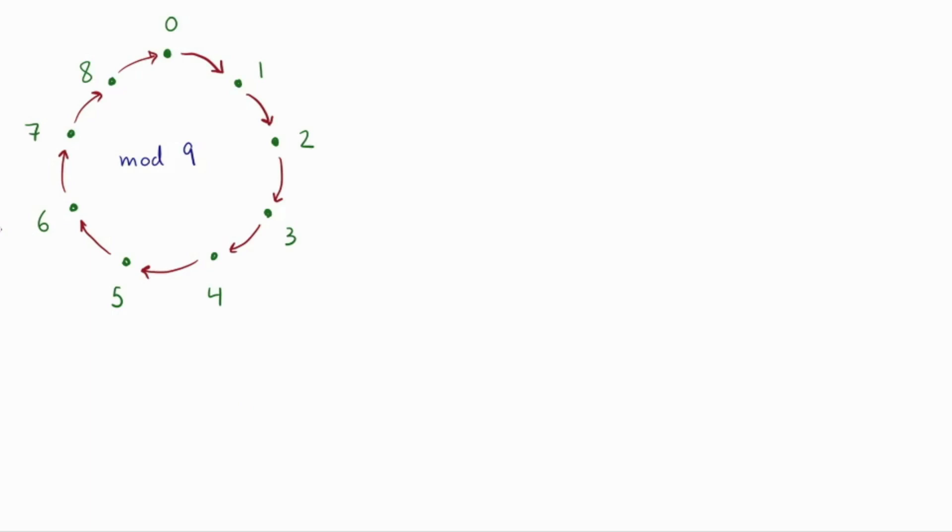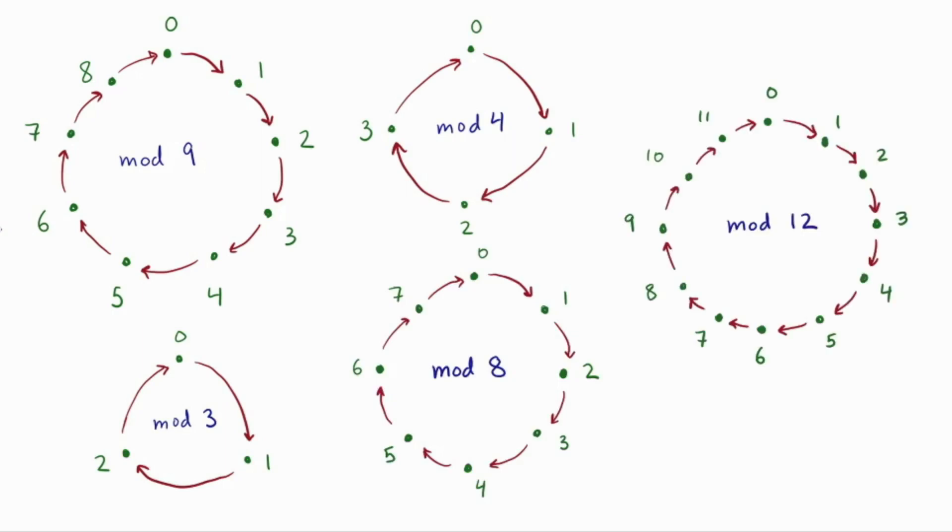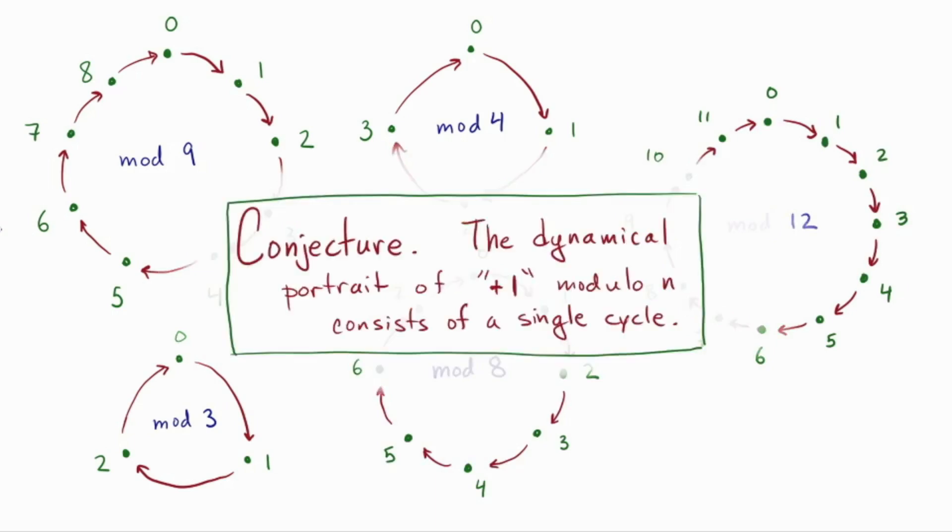Now we have a picture of adding 1. We might call this a dynamical portrait of the function x goes to x plus 1. In case you aren't familiar with my notation here, this arrow that comes out of a vertical line is usually called maps to. And it's just a different way of giving the rule for the function. So what comes in on the left becomes what comes out on the right. This portrait is much more intuitive than the table that we drew. It shows the cyclic nature that we noticed, sort of front and center. So this is an example modulo 9. Let's see if the pattern continues for other moduli. Modulo 3, modulo 4, modulo 8, and here's mod 12. So it looks robust. So to formalize our observation here, let's write down a conjecture. The conjecture is that the dynamical portrait of plus 1 modulo n consists of a single cycle.